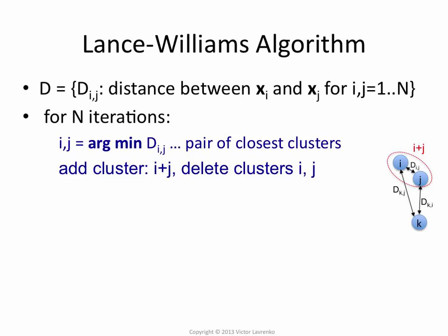So basically in this little example, these are my three clusters, i, j, and k. i and j are closest, so I'm going to merge them together, and I'm going to get rid of the individual clusters i and j. Now I have just a single cluster, i plus j.